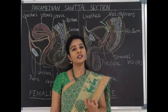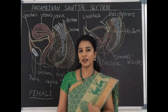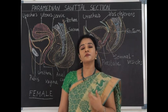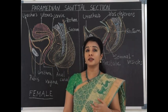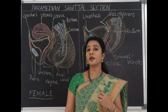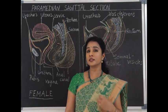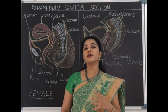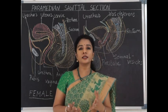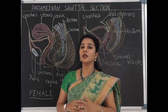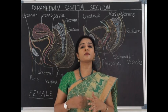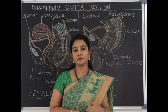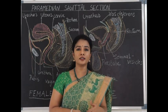When the urinary bladder is empty, it is tetrahedral in shape and is present in the lesser pelvis — it is a true pelvic organ in adults. When it is filled with urine, it occupies partly the abdomen, becoming an abdominopelvic organ.